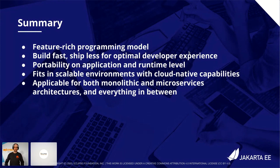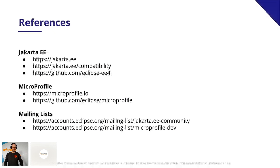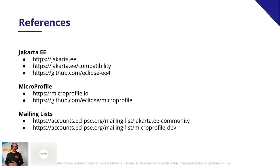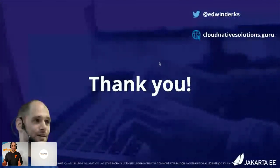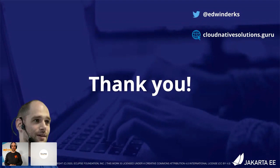To wrap up, a few references: you can always look at the Jakarta website for more information, including the compatibility page for compatible implementations. The Eclipse EE4J is the root project of the source code of Jakarta EE on GitHub, and you can participate and contribute — we're always looking for new features and insights on how to evolve the framework. The same goes for MicroProfile. You can also follow every discussion on the mailing lists mentioned. Thank you for your attention — I hope you learned something. If you want to reach out, please use my Twitter and I'll get in touch as soon as possible.